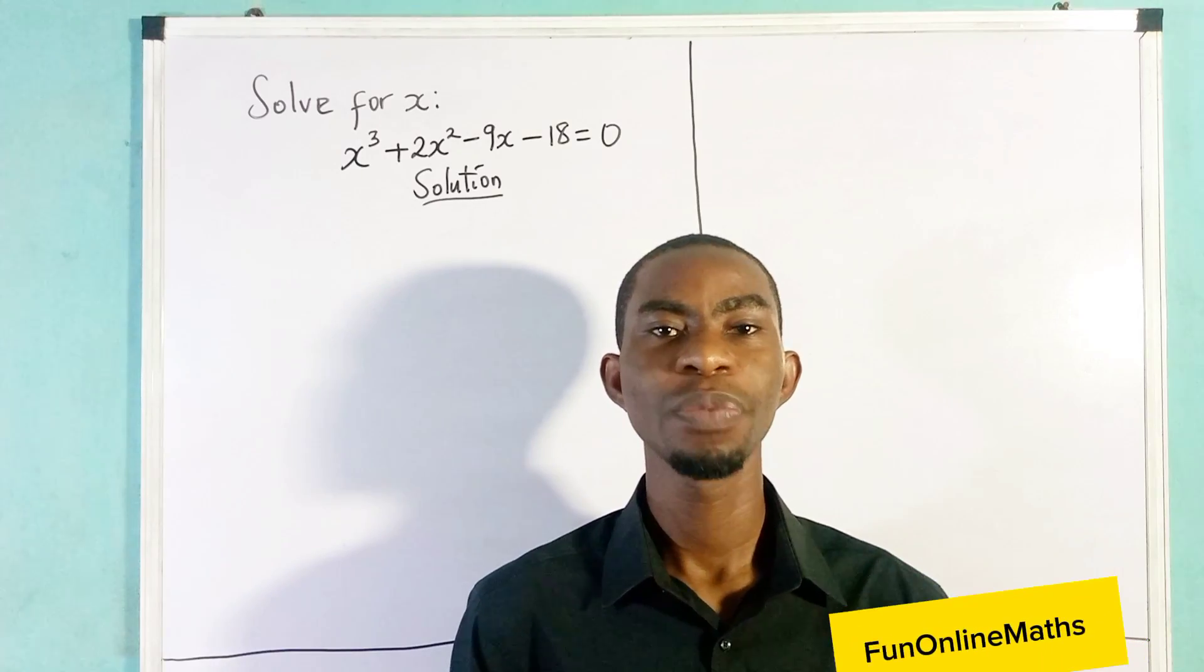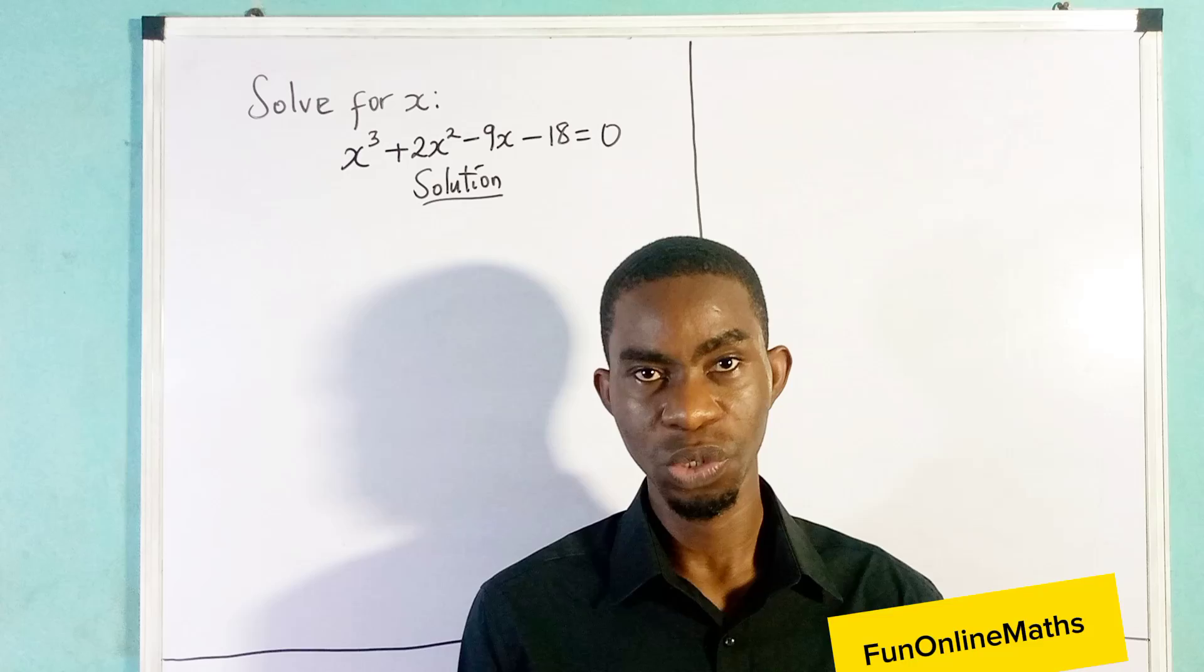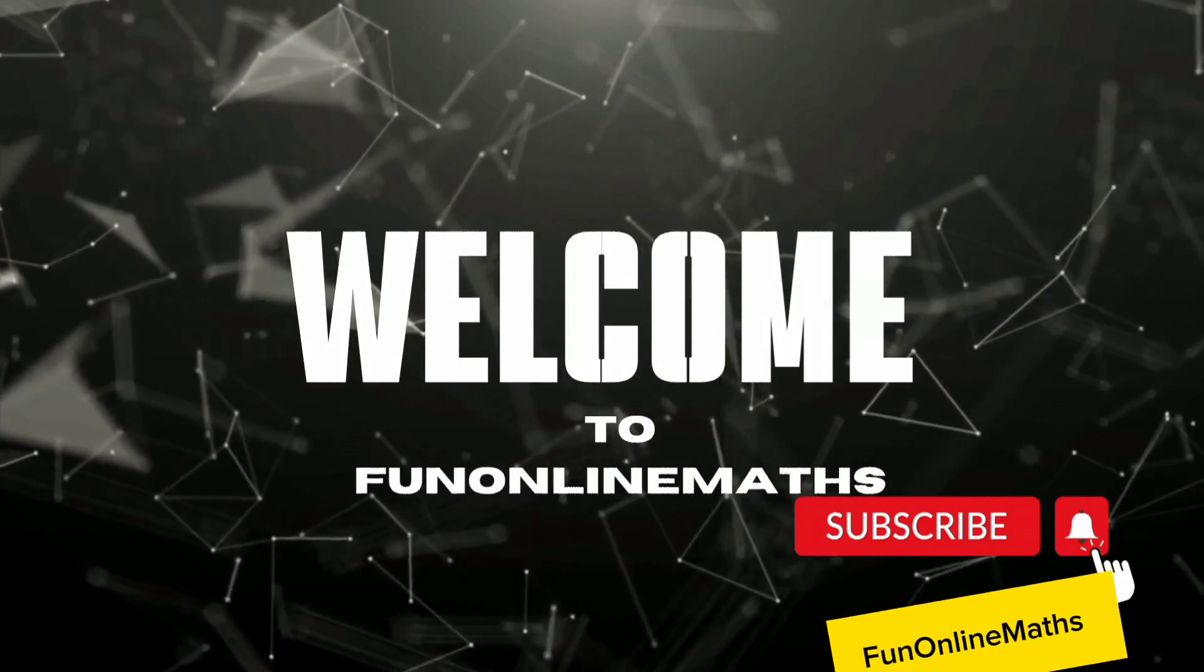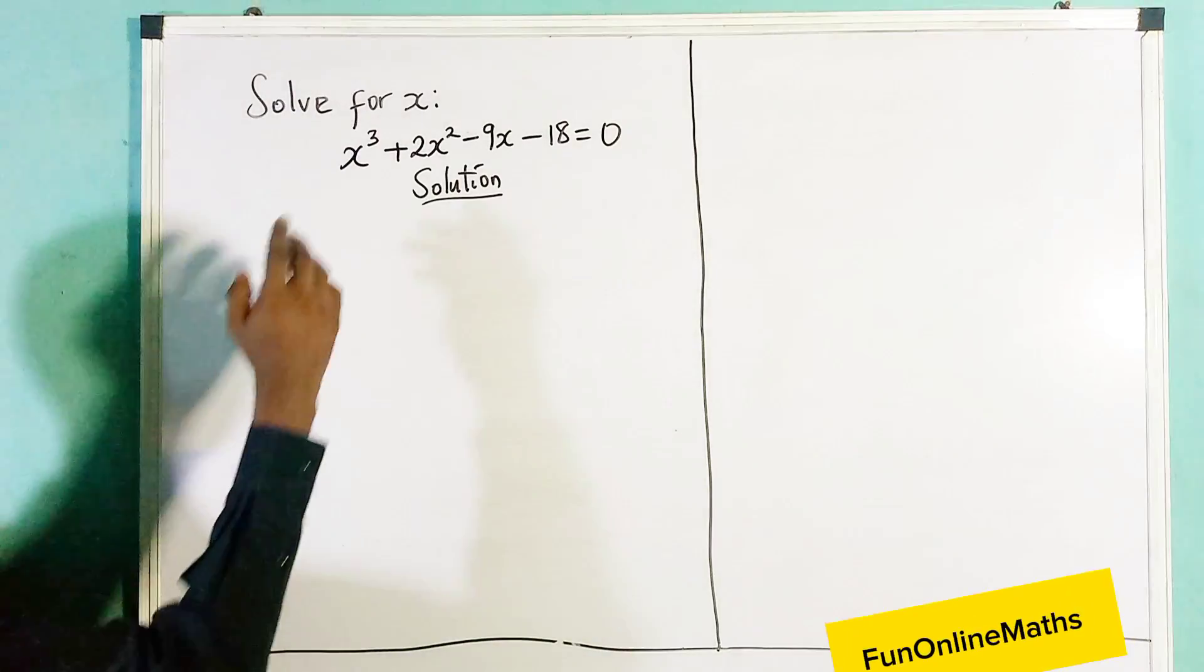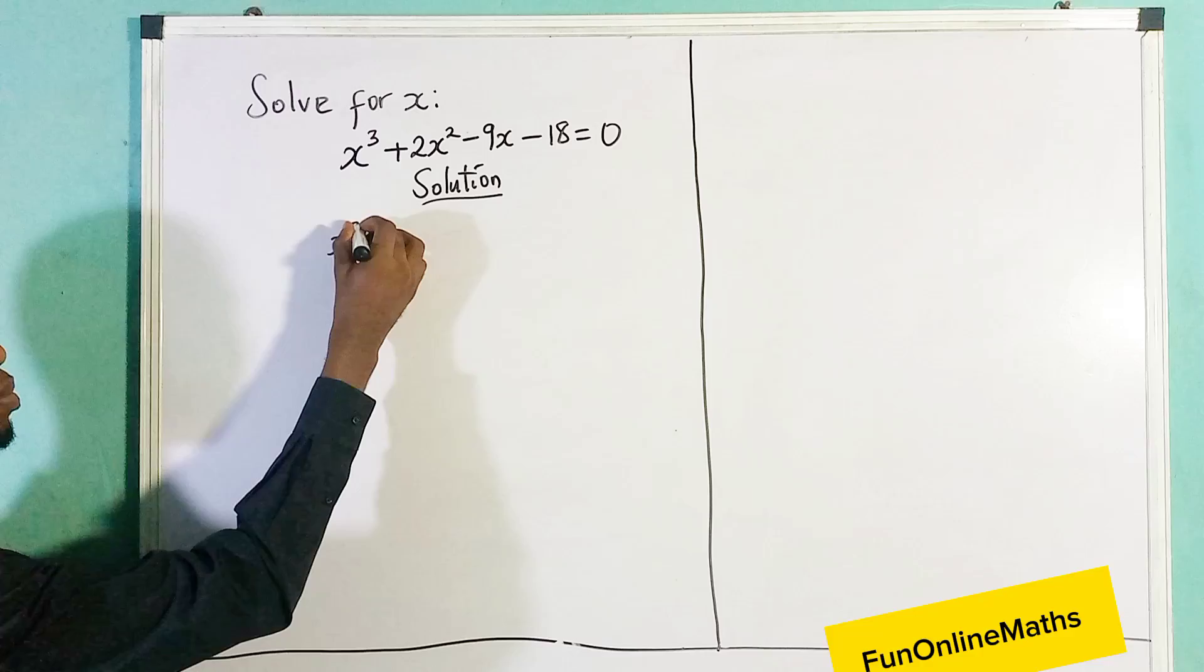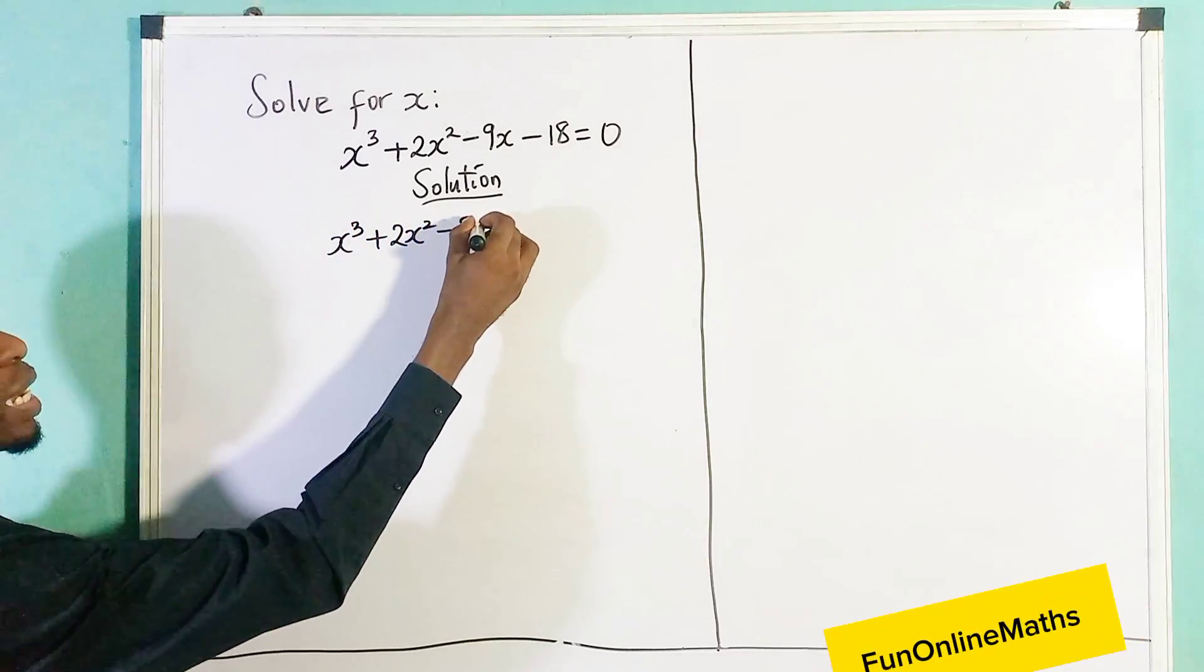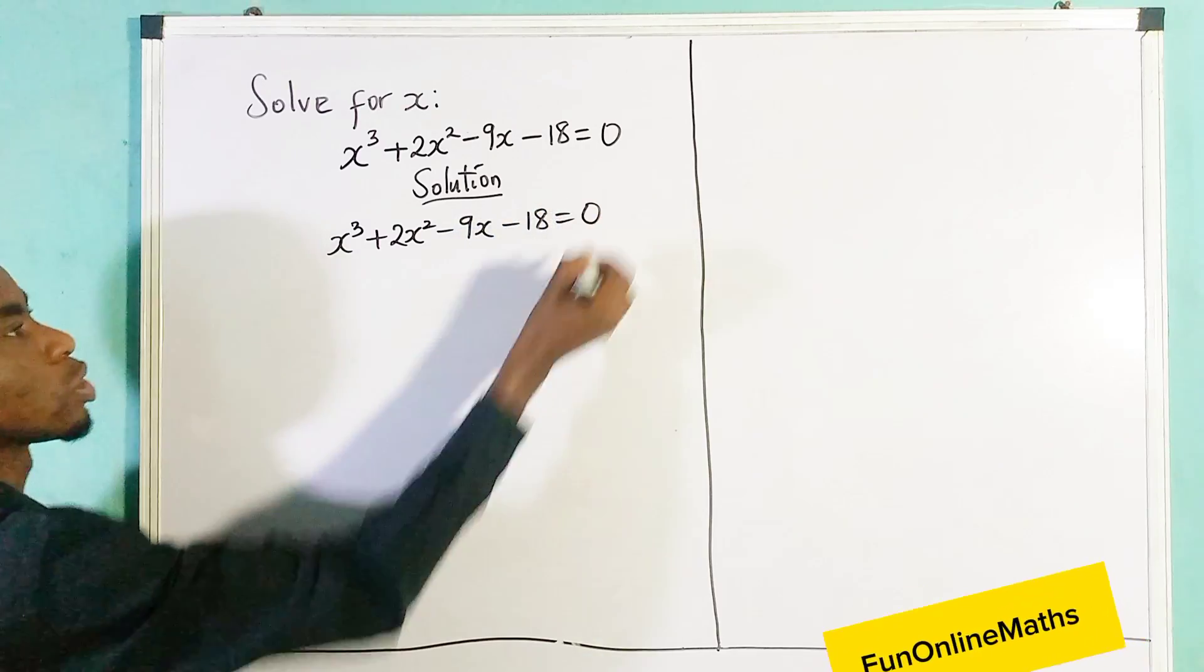Welcome to Fun Maths. Today I'll be looking at an algebraic problem and trying to find a solution to it. I'm told to solve for x where we are given x³ + 2x² - 9x - 18 = 0.